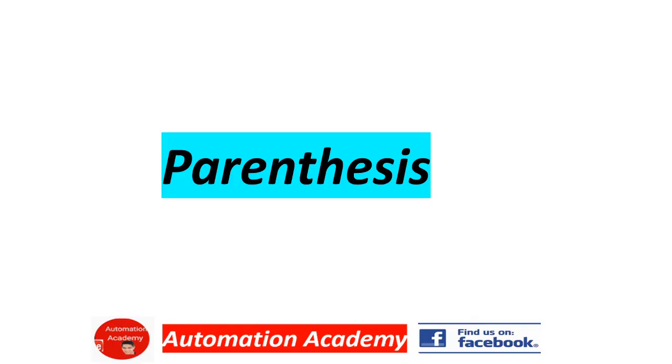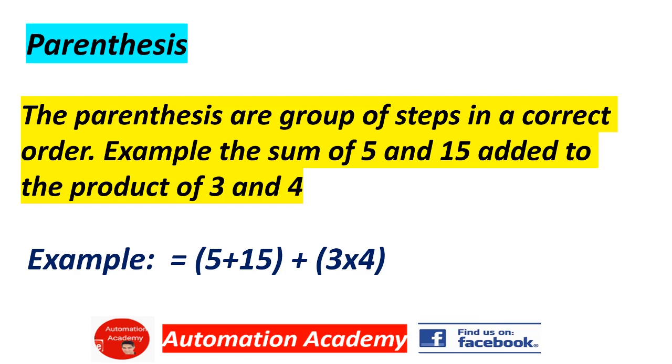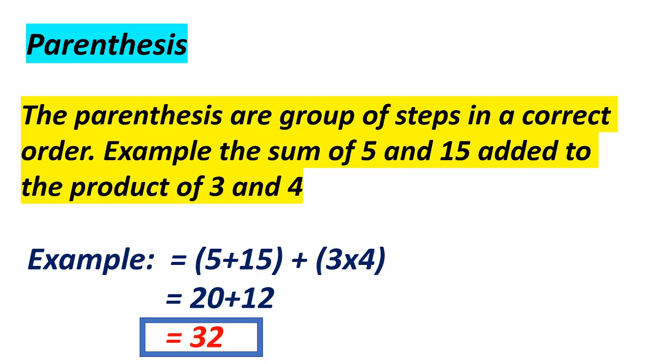Our next topic is Parentheses. Parentheses are a group of steps in a correct order. Example: the sum of 5 and 15 added to the product of 3 and 4. We have open and close parenthesis (5 + 15) plus open and close parenthesis (3 × 4). 5 plus 15 equals 20, plus 3 times 4 equals 12. The answer is 32.